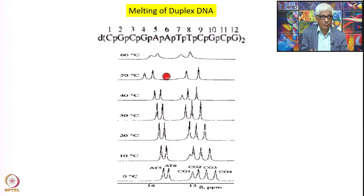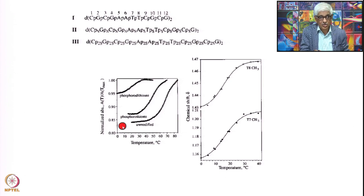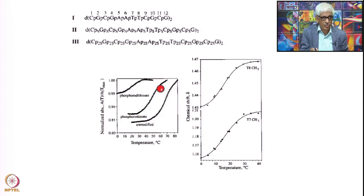This is how you identify which T and which G each imino proton belongs to as the DNA melts — by watching how the imino protons disappear. At 60°C almost all of them have vanished. This is how melting temperatures of DNA were determined using standard 1D NMR techniques, to find out whether a modification increases or decreases the stability of the DNA.